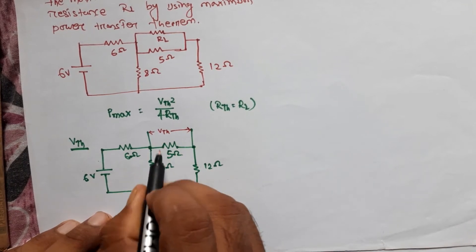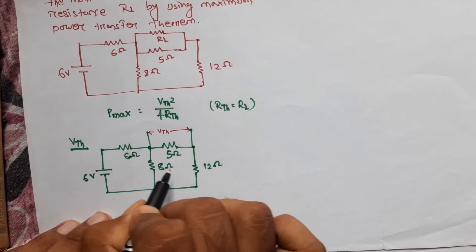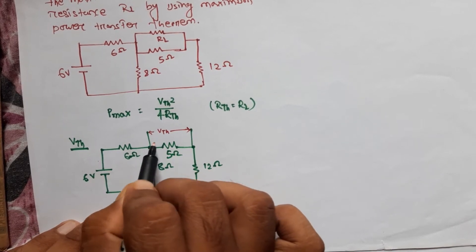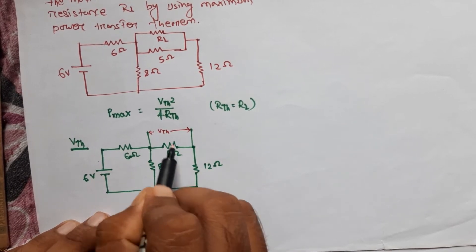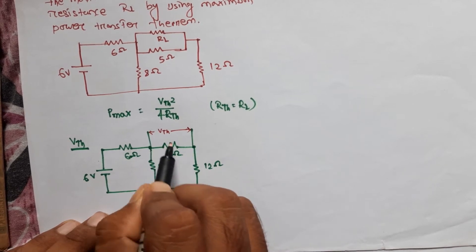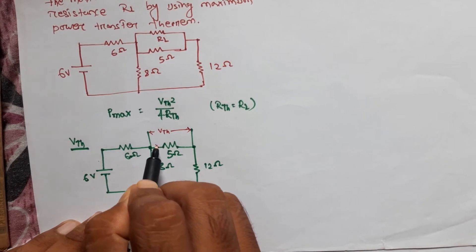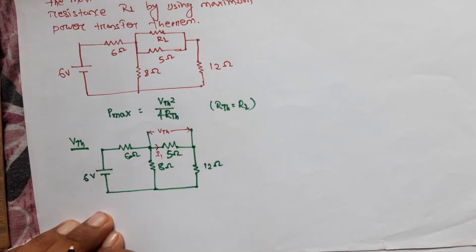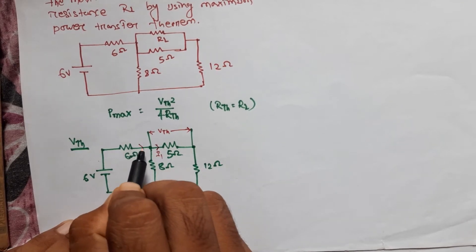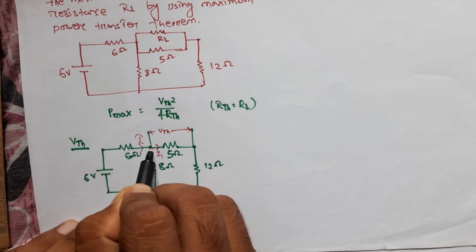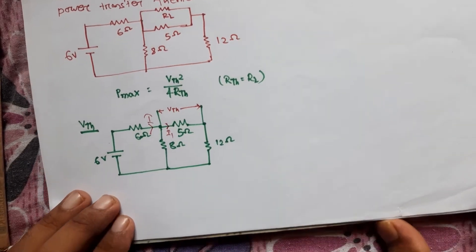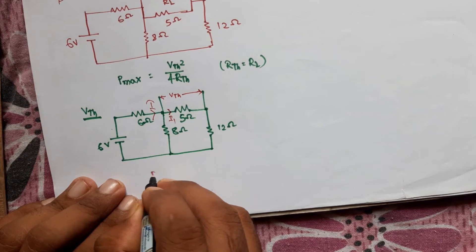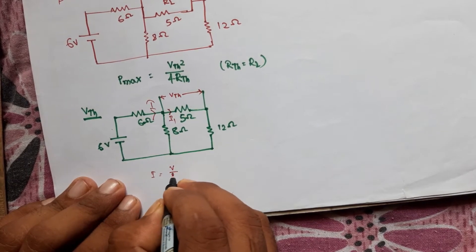Vth is the voltage drop across the 5Ω resistor. To find that, we need the current through 5Ω, which is I1. To find I1, we first find the total current I, which equals total voltage divided by R-equivalent.